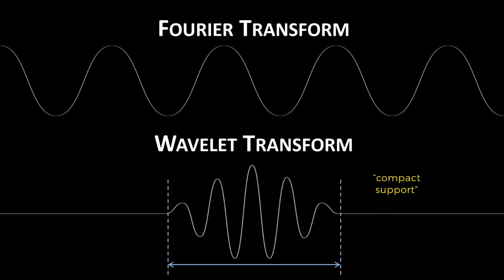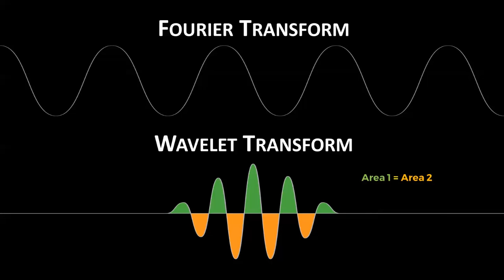Another characteristic of a wavelet is that the area underneath the curve must be zero. This is so that the energy is equally distributed in the positive and negative directions.